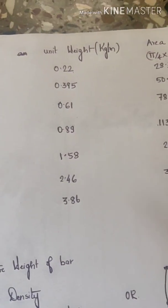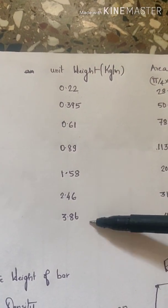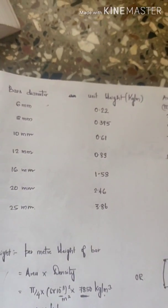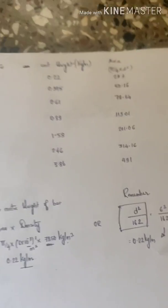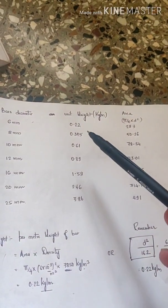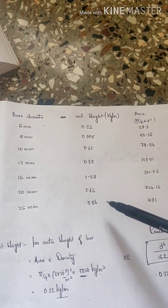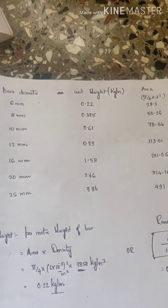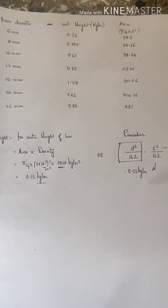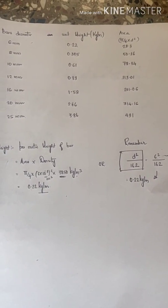Similarly, you have to remember all this unit weights up to 25mm or remember this formula: 0.22, 0.395, 0.61, 0.89, 1.58, 2.46, 3.86. Hope you are clear with this, thank you.